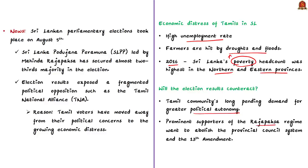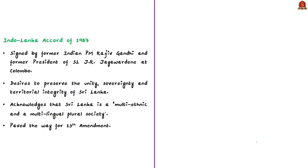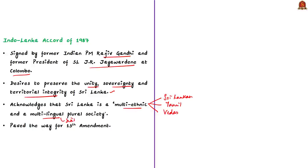The prominent supporters of the Rajapaksha party have already sought the abolition of the provincial council system and the 13th Amendment. The 13th Amendment of the Sri Lankan constitution is an outcome of the Indo-Sri Lanka Accord of 1987, which was signed by former Indian Prime Minister Rajiv Gandhi and the then President of Sri Lanka, Jayewardene, at Colombo. It is an important agreement since it desires to preserve the unity, sovereignty and territorial integrity of Sri Lanka by acknowledging that Sri Lanka is a multi-ethnic and multilingual plural society — multi-ethnic because there are Sinhalese, Tamils and others like Vedda, and multilingual because both Sinhalese and Tamil are spoken.